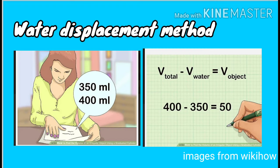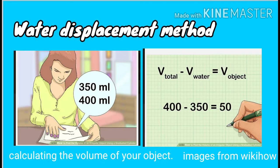Subtract the level without the object from the level including the object to reach the volume of the irregularly shaped object. The result may be in milliliters if you use a standard graduated cylinder.